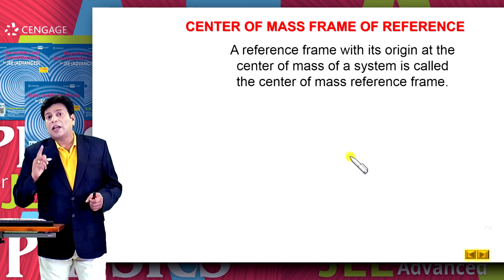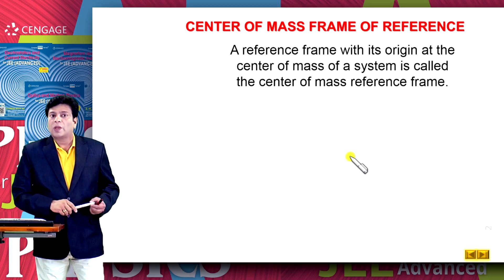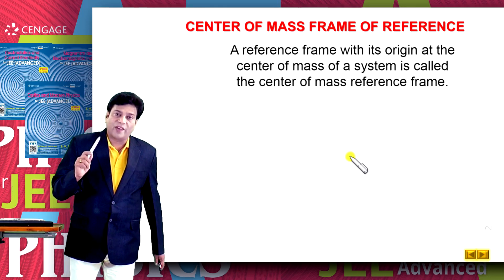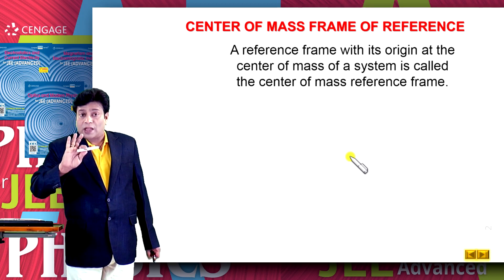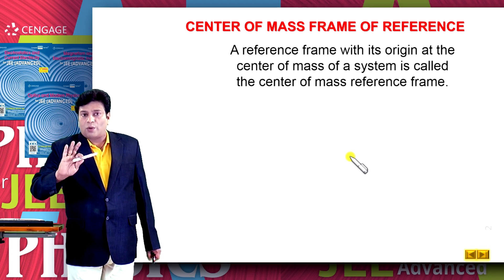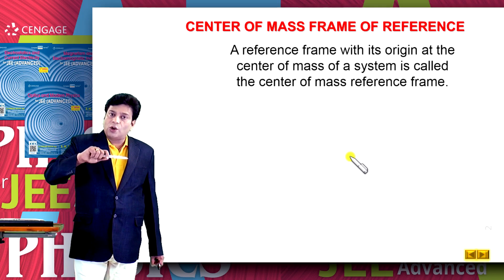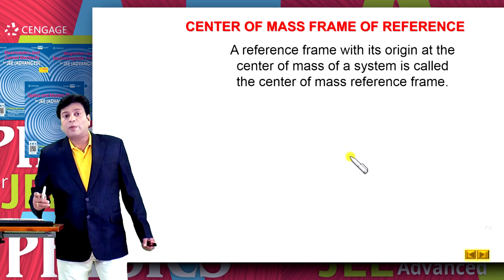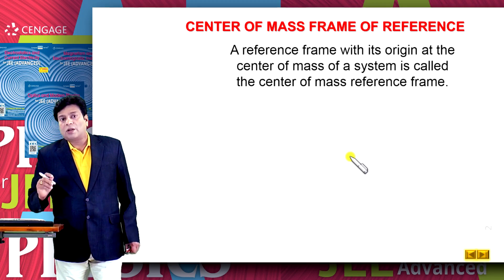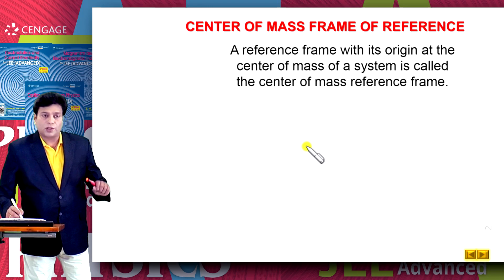That means in the center of mass frame, the velocity of the center of mass is 0. And in the center of mass frame of reference, the velocity of the center of mass is 0, which means the linear momentum of the center of mass should be 0, because linear momentum equals mass multiplied by velocity. That means the linear momentum of the system as observed from the center of mass frame of reference should be 0.